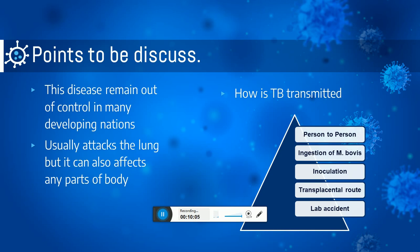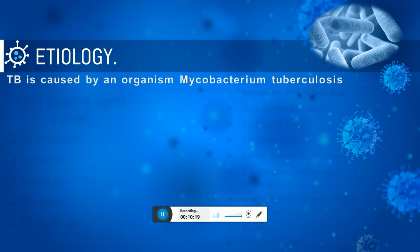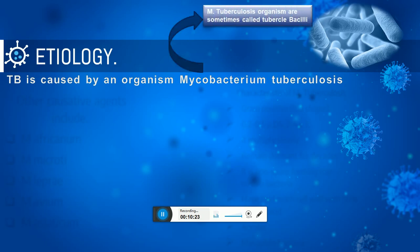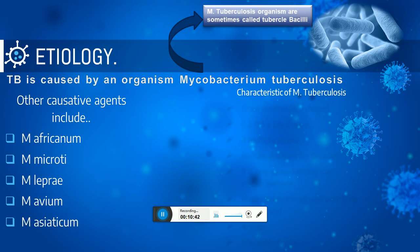TB is caused by Mycobacterium tuberculosis, sometimes called tubercle bacilli. Other species of the mycobacterium group include Mycobacterium africanum, Mycobacterium microti, Mycobacterium leprae, Mycobacterium avium, and Mycobacterium scrofulaceum. Before studying any disease's treatment and diagnosis, we must know what the causative agent is and how it looks — its morphology and characteristics — so we can target and kill that particular bacteria.